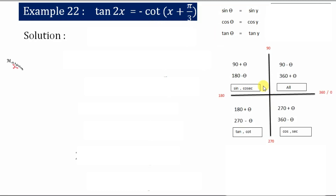For that, you need to understand the quadrant and its values. This is the first quadrant, second quadrant, third quadrant, and fourth quadrant. It starts from 0°, 90°, 180°, 270°, and 360°. In the first quadrant, all the measures will be between 90° - θ and 360° + θ, as this quadrant does not cross 90°. The fourth quadrant has already crossed 360°, that's why it will be 360° + θ.